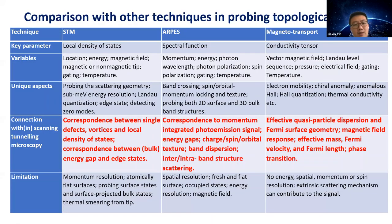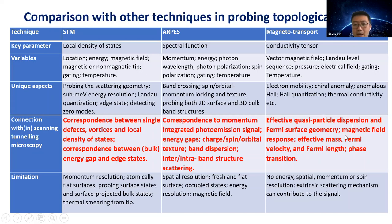The STM technique in this research area can be compared with complementary techniques including photoemission and magneto-transport. We can directly compare the STM-obtained local density of states with momentum-integrated photoemission data, compare energy gaps and their closing temperatures measured by STM and photoemission, compare with magneto-transport especially on phase transitions, and compare the magnetic field response of the electronic band structure measured by STM with magneto-transport.